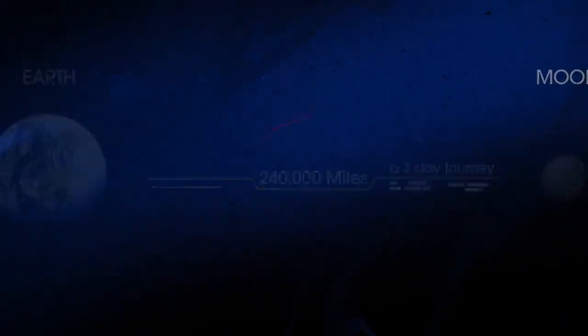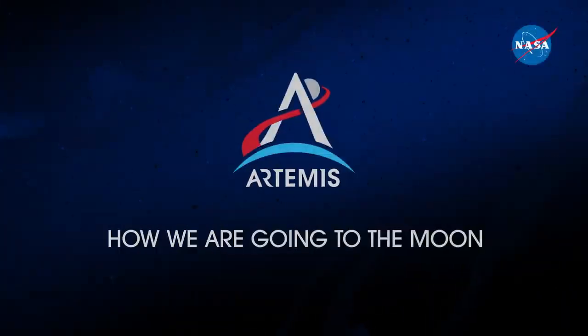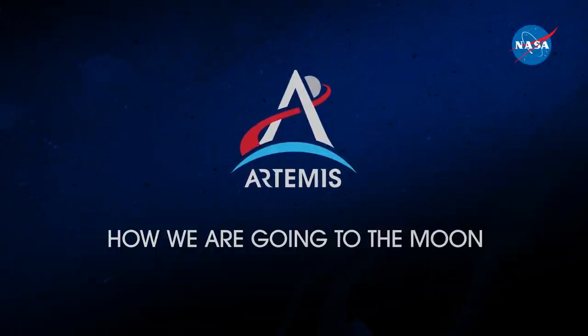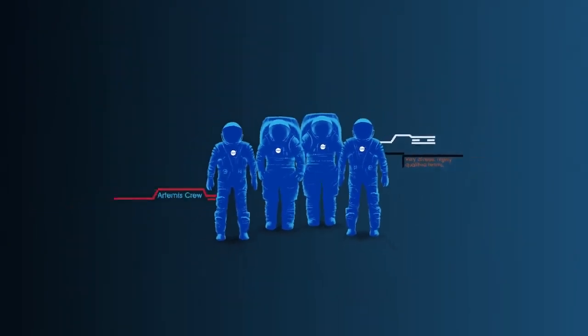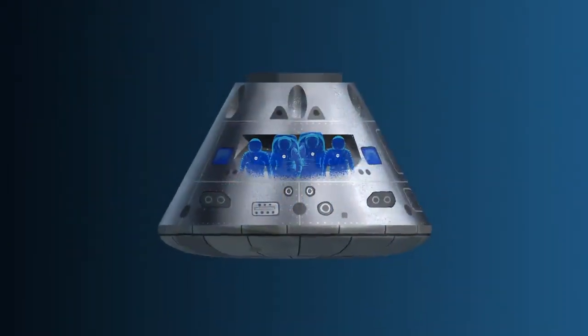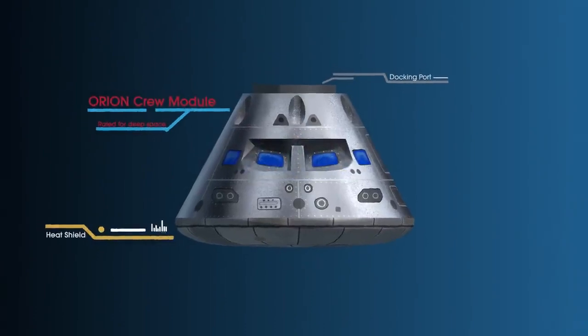So, what will an Artemis mission look like? Everything is designed and tested with our most important element in mind, the astronauts. This is their deep-space, human-rated spacecraft called Orion, built in three parts.